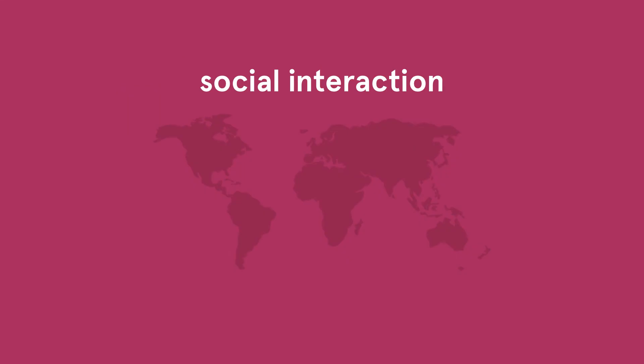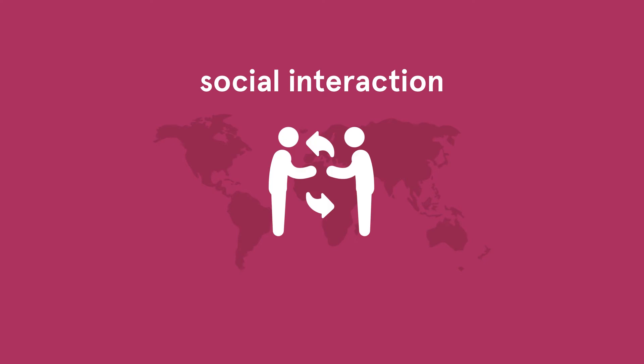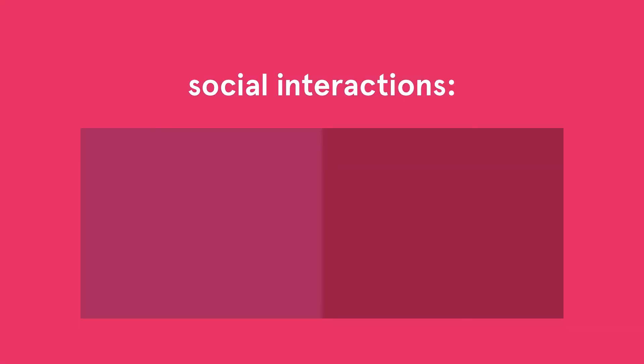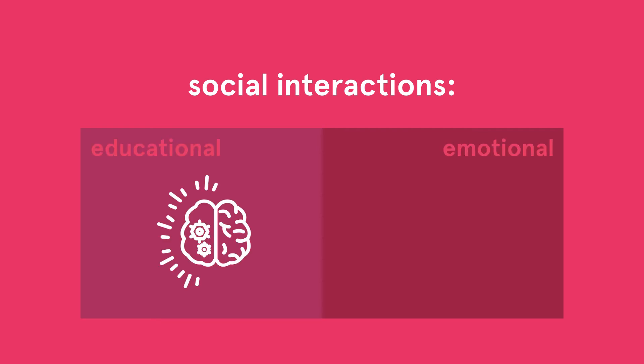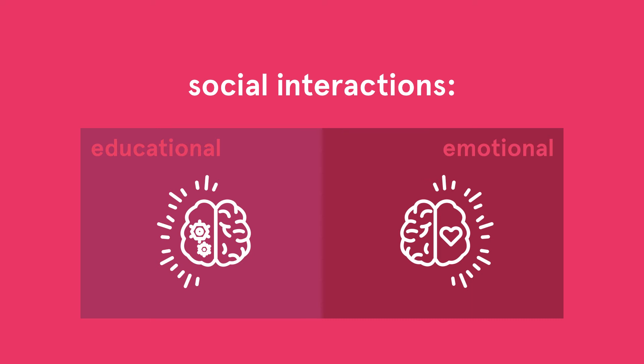Social interaction is vital for critical thinking in groups because it's believed to be the most natural way that people learn. Social interaction is a prerequisite for building learning communities online because through interpersonal interactions, e-learners can engage in critical discussion and social construction of knowledge. There are two dimensions of social interaction: educational and psychological or emotional. Interpersonal interactions are either task-driven or social-emotional.